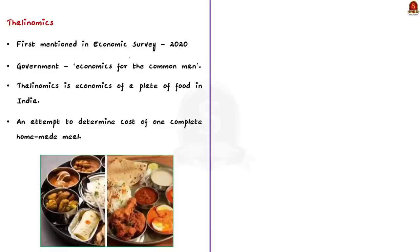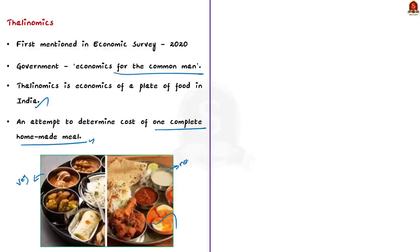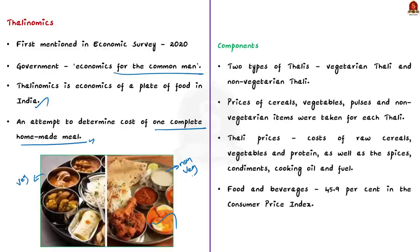Firstly, what is thalinomics? The Economic Survey 2020 first coined the term thalinomics. The government called it the economics of the common man. In simple words, thalinomics means economics of a plate of food in India. It is the attempt to determine the cost of one complete homemade meal, that is the healthy Indian thali. Usually, two types of thalis are considered for the analysis: the vegetarian thali and the non-vegetarian thali. Quantities for cereal, vegetable, pulses and non-vegetarian items are taken for each thali, assuming that at least two full meals would be consumed in a day. Based on this, the thali prices were calculated.